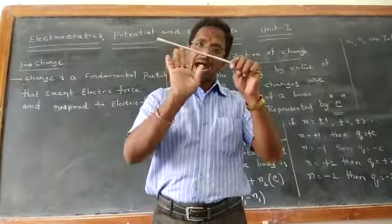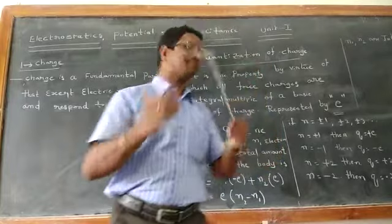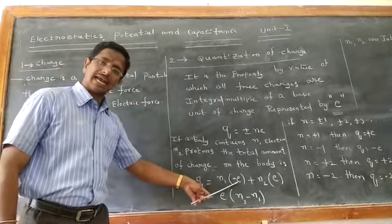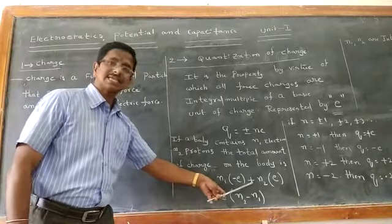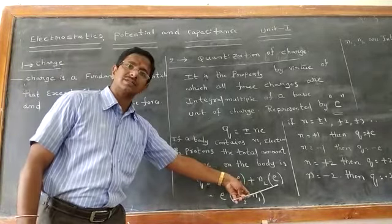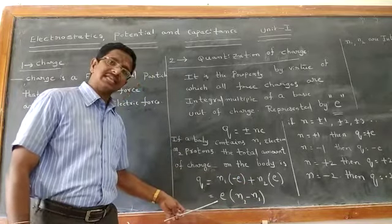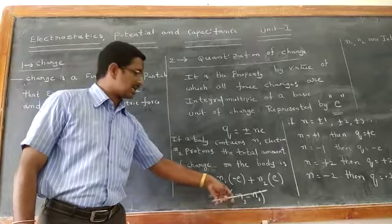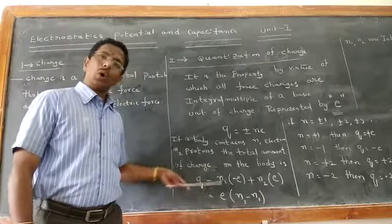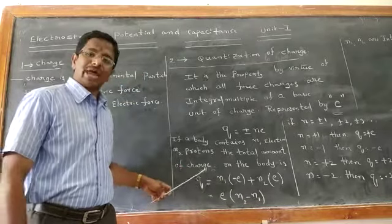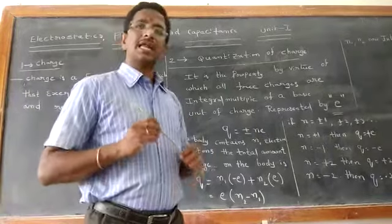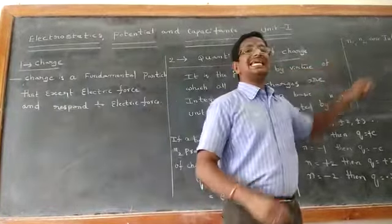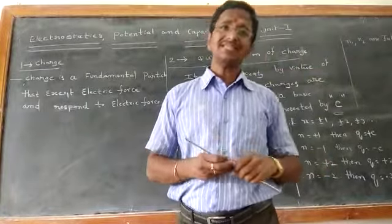The mathematical equation is Q = N1 electrons plus N2 protons. Taking E as common, we get E(N2 − N1). Therefore N2 minus N1 gives the total charge of that body, where N1 and N2 are integers — integers means whole numbers.